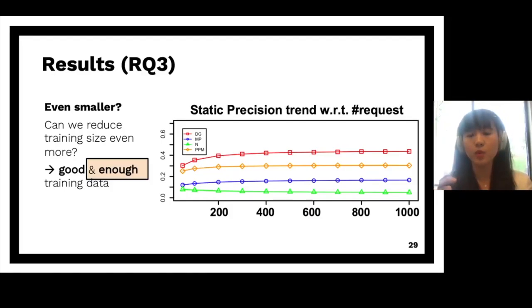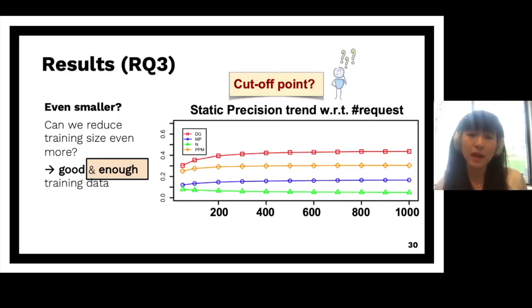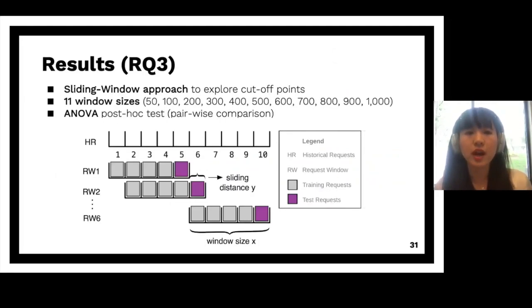So this is inspired by the trend of the accuracy across different algorithms. So this is an example of the static precision trend when the number of requests grows. As you can see, they converge at some point, right? And this trend actually holds for all three accuracy metrics. And this got me thinking that there might be a cutoff point. And after this cutoff point, the more data you feed your model, your results probably won't change much.